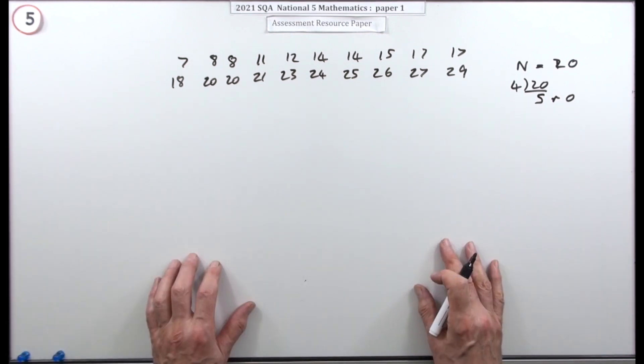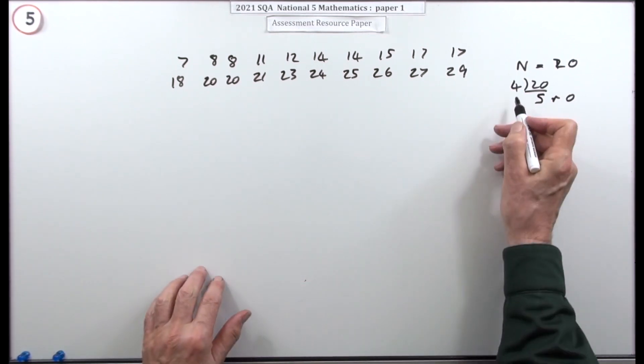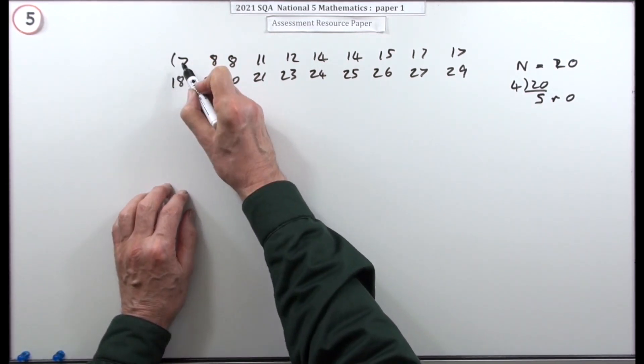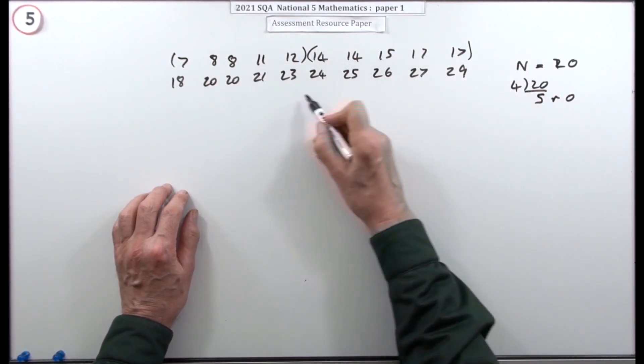They would have been the quartiles, the numbers that split them into four groups. But there's nothing there, so you're going to have to go in between to find the quartiles.